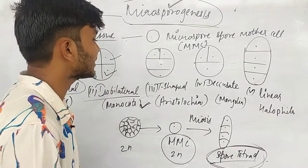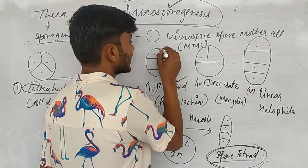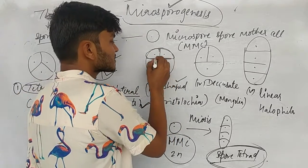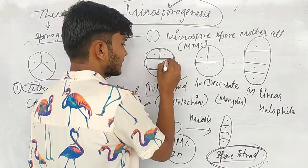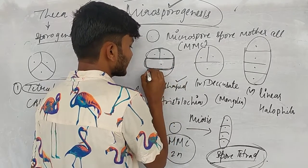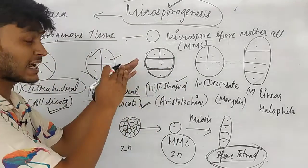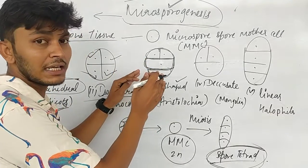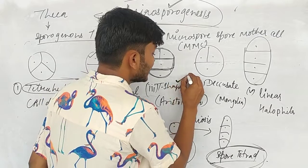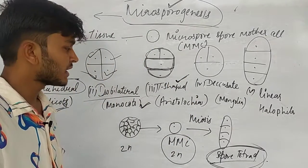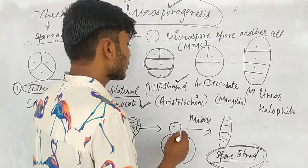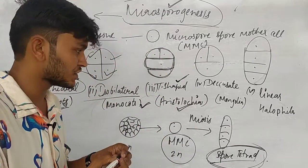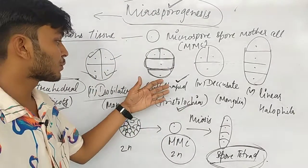In a T-shaped spore tetrad, two spores are found on top and two spores are arranged in a linear way below, making the arrangement resemble the letter T. An example of T-shaped spore tetrad is Aristolochia.